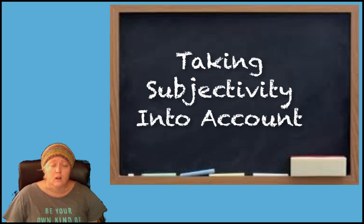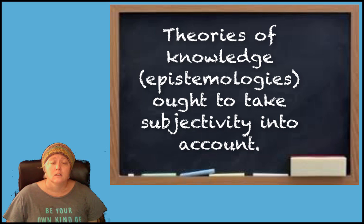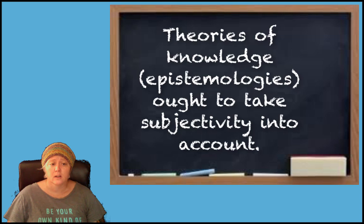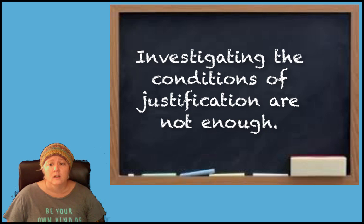What she's arguing should be pretty evident simply from the title of the text, Taking Subjectivity into Account. Code is arguing that theories of knowledge ought to take subjectivity into account. That is, epistemologists have to attend to the location of the subject, the nature and situation and context of the subject of knowledge, of the knower, as much as they attend to the content of the knowledge claim — that is, the object of knowledge. Code argues that, contra the history of Western epistemology, the necessary and sufficient conditions for justifying knowledge claims does not give us a complete epistemological project.